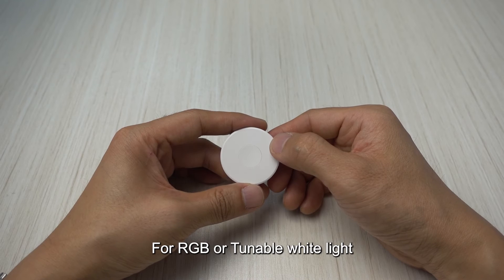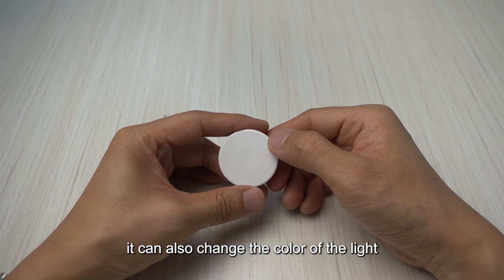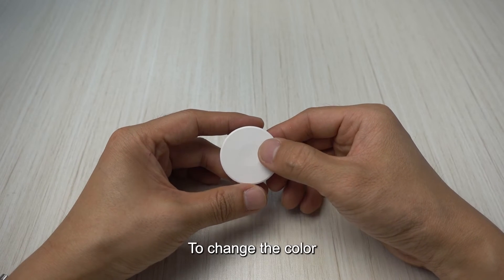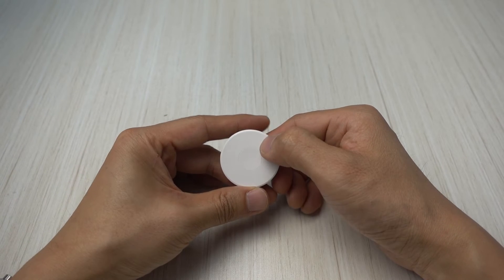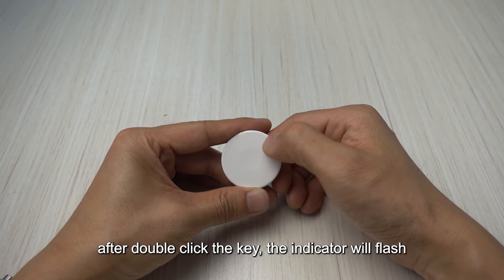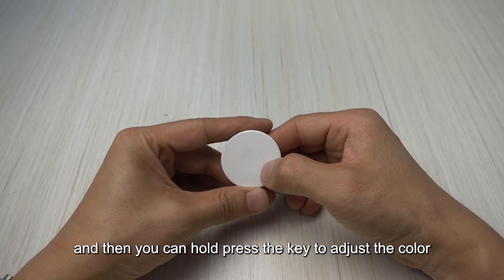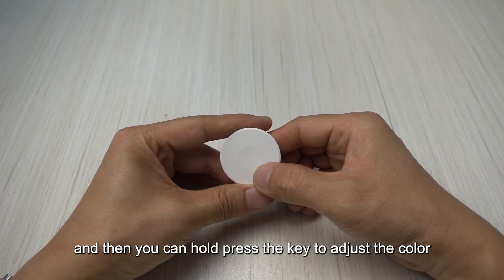For RGB or tunable white light it can also change the color of the light. To change the color you need to double click on this key and then hold press. After double click the key the indicator will flash and then you can hold press the key to adjust the color.